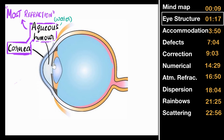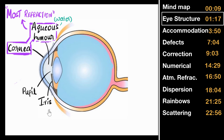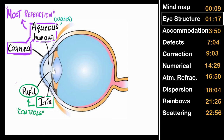The next part is a disc-shaped structure called the iris. At the center of the iris there is a hole called the pupil. The main job of the iris is to control the size of the pupil: when there is a lot of light, the iris makes the pupil smaller, and when there is less light, the iris makes the pupil larger.